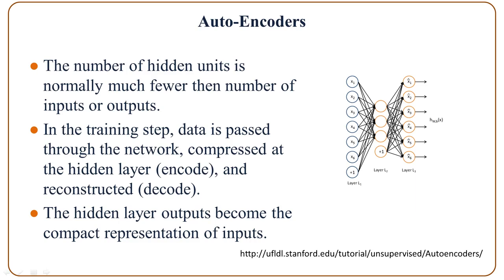Let's look at an example. In the training step, the data is passed through the network and compressed at the hidden layer, then reconstructed at the output layer. After training, if we remove the output layer, what we have left is the compact representation of the inputs provided by the hidden layer.